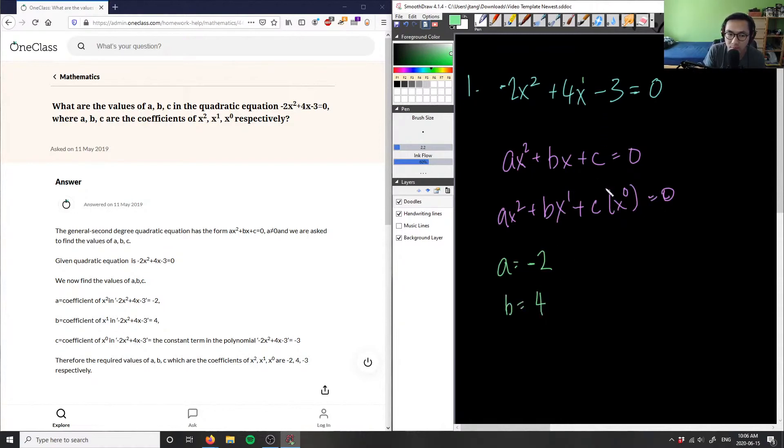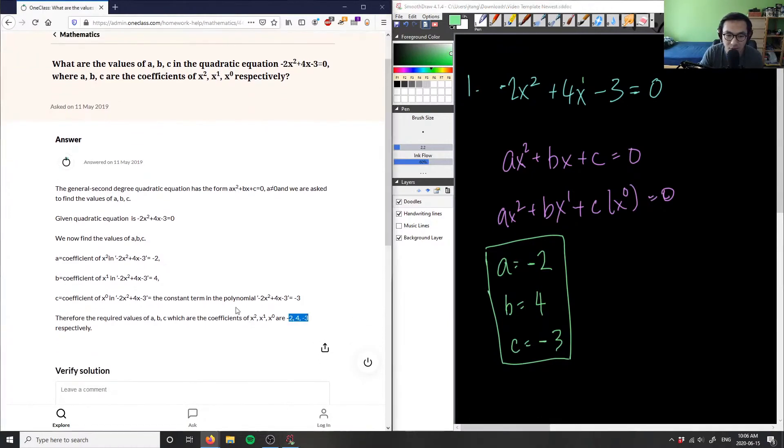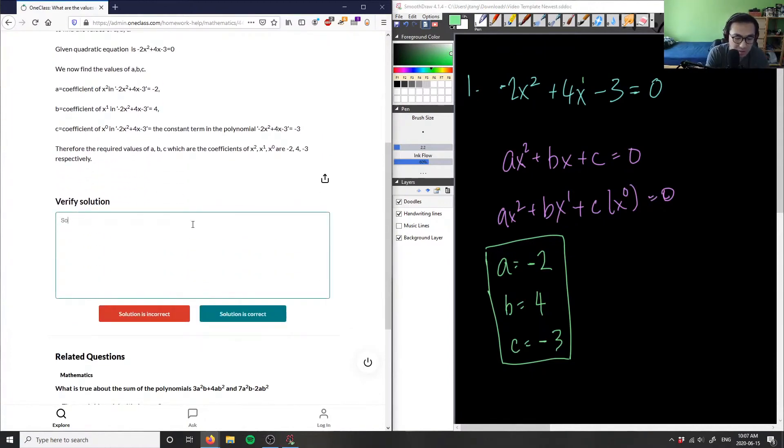And finally, c here is going to have to equal negative 3, because that's going to be our constant term. And again, we don't see the x to the power of 0, because x to the power of 0 is simply just 1. But we can say here, c is going to equal this negative 3 term here. So, a, b, c are these coefficients: a equals negative 2, b equals positive 4, and c here equals negative 3. So, this here is our solution, which is the correct solution.